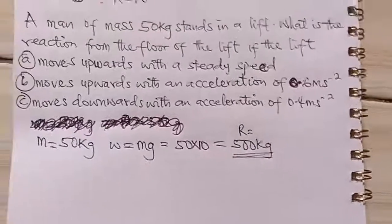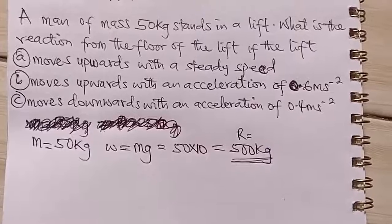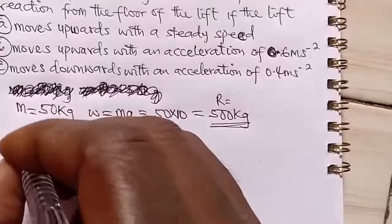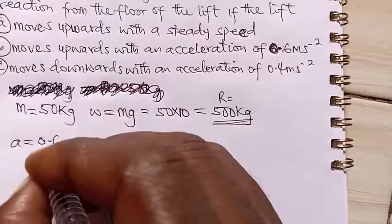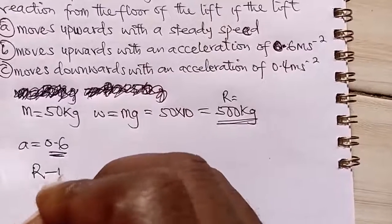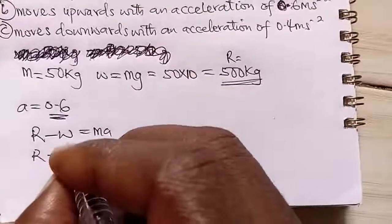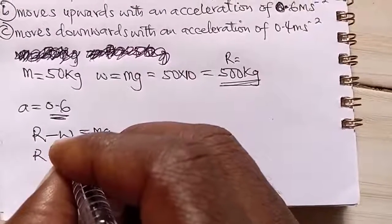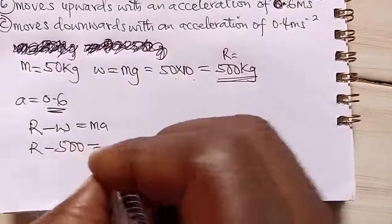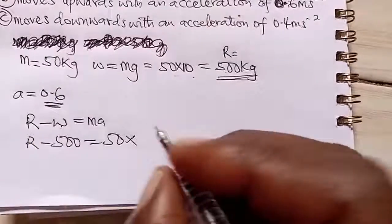The second one, it says if it moves upward with an acceleration of 0.6 meters per second squared. Now for it to move upwards, remember acceleration now is 0.6 that we're going to use now. If it moves upward, it means that the reaction will be greater than the weight and that will produce ma. So if we say R minus the, our W, remember we got it to be 500. So 500 is equal to m, our m is 50. Now our a is 0.6.